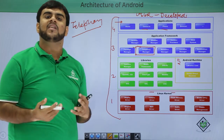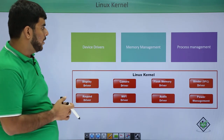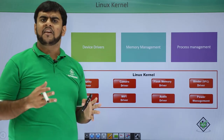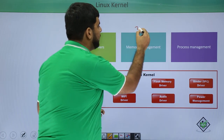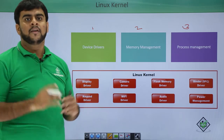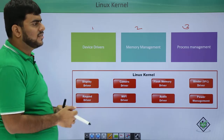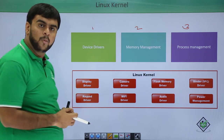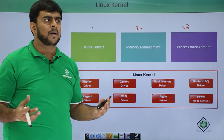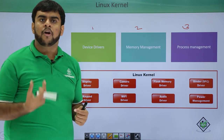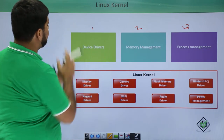Now let's go deeper into all of these layers. Starting with the Linux kernel — the kernel is basically involved in three main parts: first, device drivers; second, memory management; third, process management. These three main parts apply to any computing machinery. A device driver gets work done from a particular device — a device being your hardware like your memory chip, camera, or Wi-Fi.